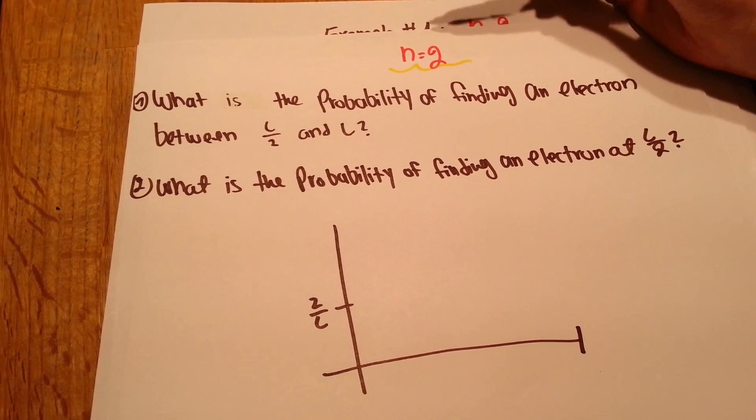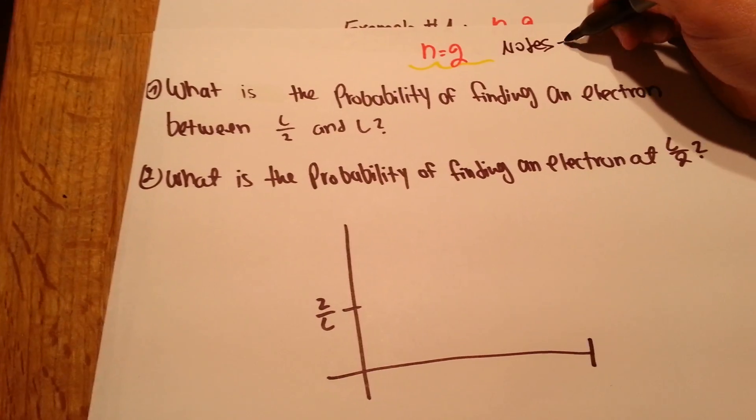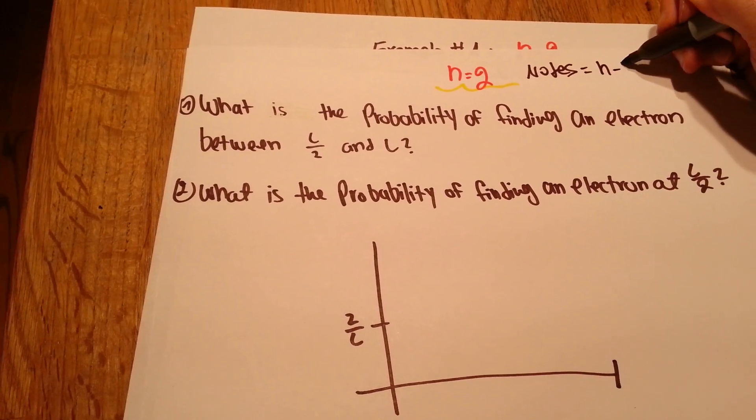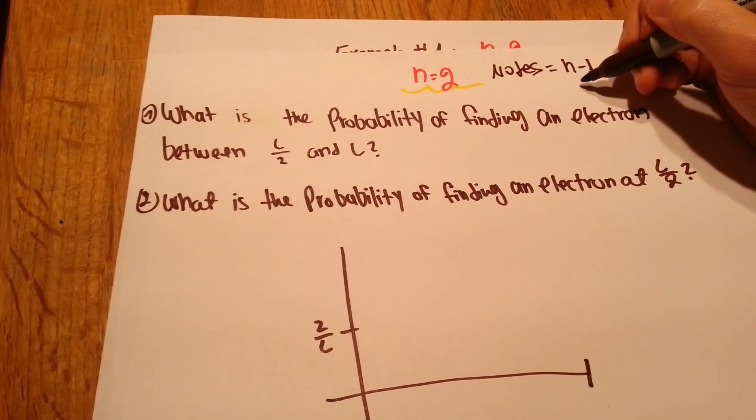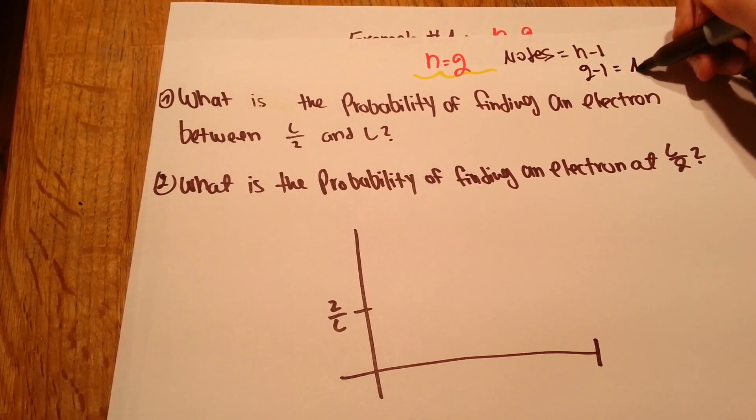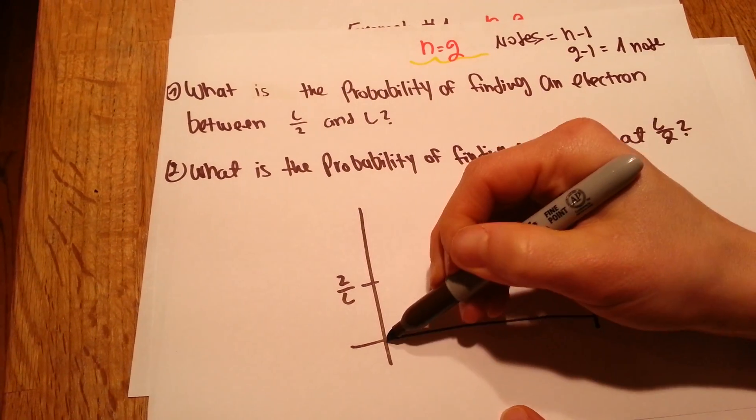Since our n is 2, and if you remember the formula for nodes, nodes are going to be always n minus 1. So if we have n equals 2, 2 minus 1 equals 1 node. So we know we're going to have only one node.